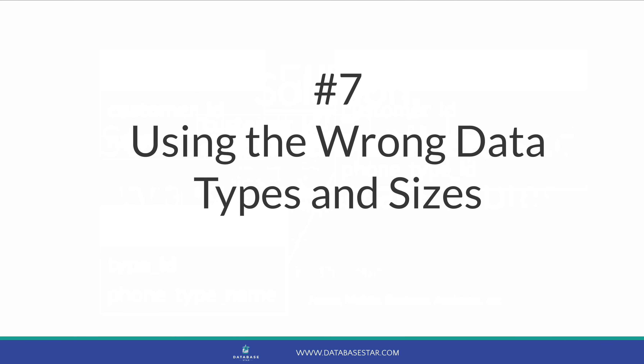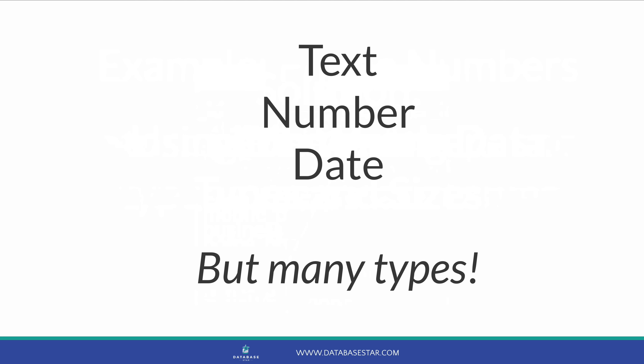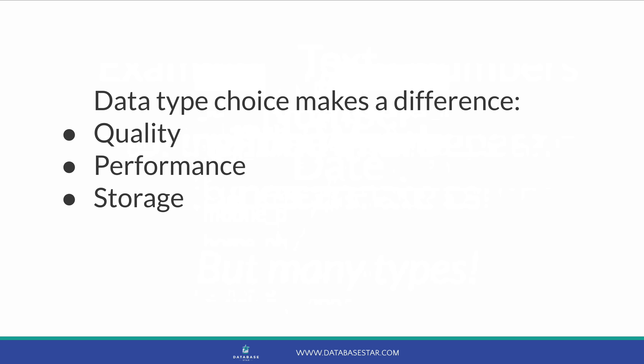The final mistake is using the wrong data types and sizes. Part of designing a database is determining data types and sizes for each column. Generally there are three categories: number, text, and date — but within each are many different data types. There are a range of number types depending on whether you want decimal places and how large a number you need. Data types also depend on which database you're using, as they are not standard across databases. Using the right data type can improve data quality, database performance, and reduce storage.